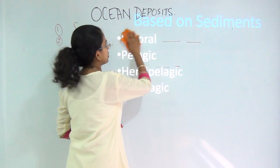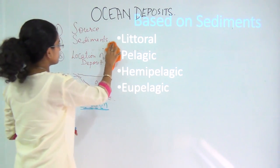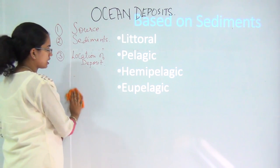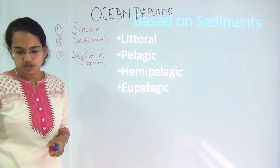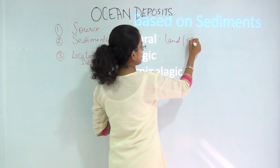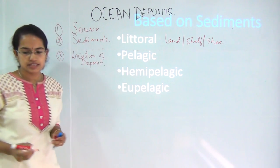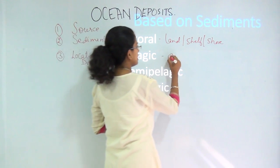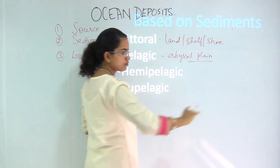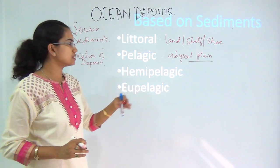The next classification is based on the type of sediments. We have already talked about the various sources of ocean deposits, and now we cover the classification based on sediment. The first type is neritic, which comes from land — from the continental shelf or continental shore region. The next is pelagic deposits, found in the abyssal plains or the lower-most levels of the ocean floor, which we have already discussed when talking about the relief features of ocean water.